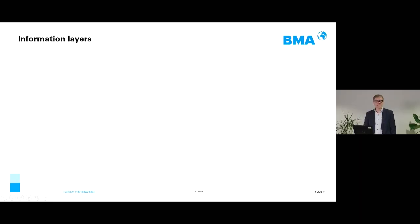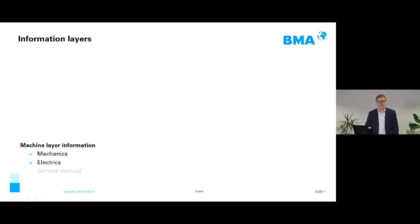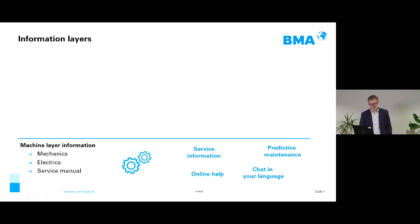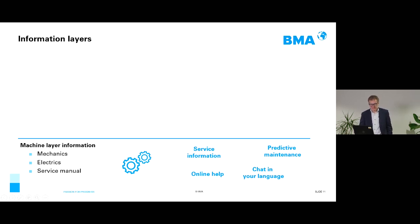There are many features and services connected to digital services, so it is not easy to understand to whom the benefit is dedicated. One approach is the use of information layers, which assigns different features to different target groups. There are three layers. I start with the machine layer. The machine layer gives us information on mechanics and electrics, and includes, for example, the service manual. Some buzzwords fitting this layer are shown on the right side and I will explain the details on the following slides.